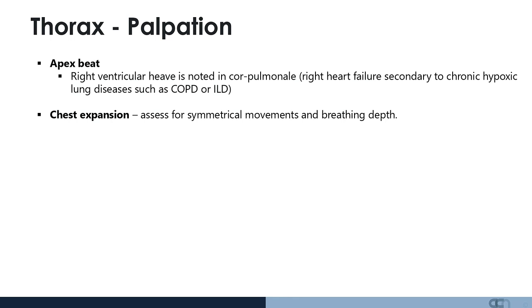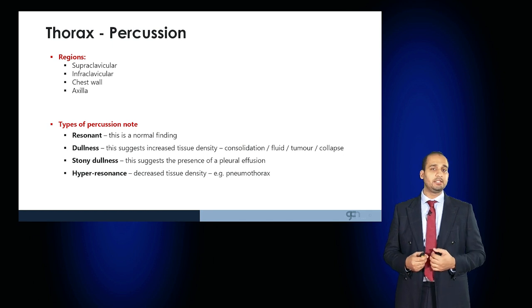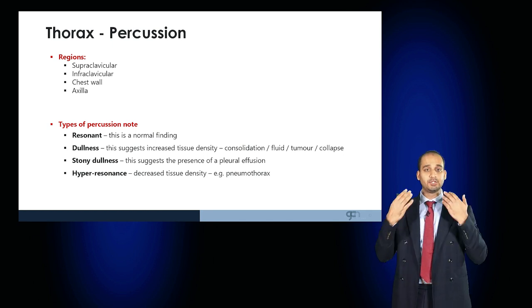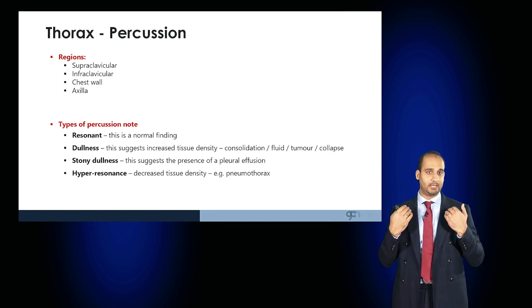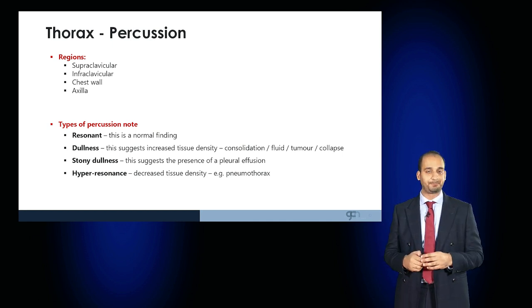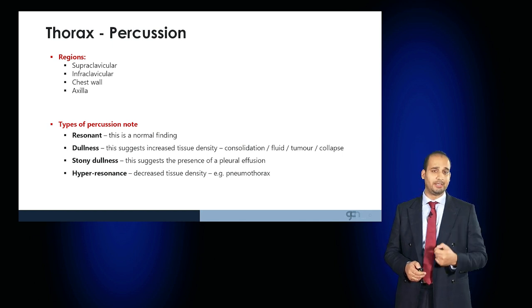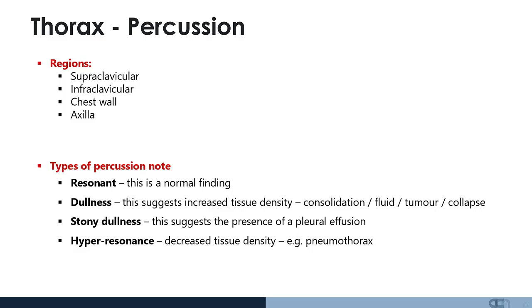Once you've palpated the chest, move on to percussion. The regions to percuss include the supraclavicular, infraclavicular, as well as the whole chest wall and the axillae. Resonant is a normal finding. Dullness suggests an increase in tissue density such as consolidation, fluid, tumour, or collapse. Stony dullness specifically relates to the presence of a pleural effusion. Hyperresonance occurs as a result of decreased tissue density, for example in a pneumothorax.